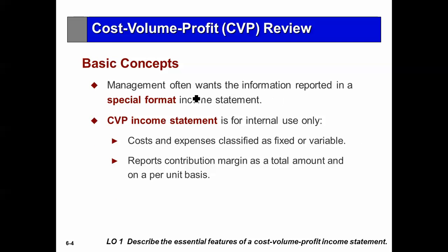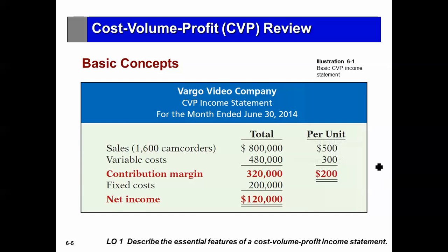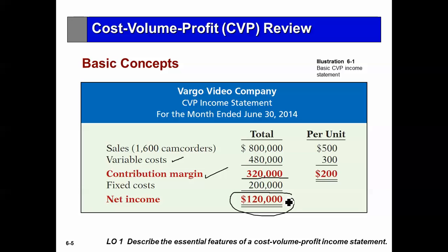Basic concept: management often wants information reported in a special format income statement. This is called the CVP format, and it's only used internally. We take the actual income statement, which has revenue minus all expenses, but we classify the expenses — calling them costs — as either fixed or variable, and then report it in a contribution margin format. Instead of having sales and all costs giving net income of $120,000, we say: sales, and we subtract from sales just the variable cost first, which gives us a contribution margin. Then from the contribution margin, we subtract the fixed cost, and what's left is our profit.